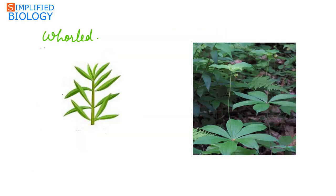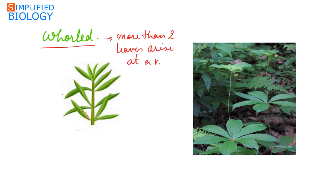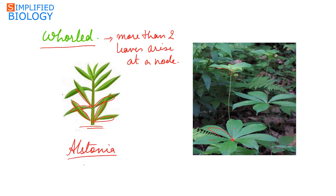The last type is whorled phyllotaxy. Whorled means more than two leaves arise at a single node. In one figure we can see three leaves arising at each node, while in another figure there are seven leaves arising at a node. So when more than two leaves arise at a node, that is known as whorled phyllotaxy, seen in the case of Alstonia and Nerium — also called Oleander or Kaner.